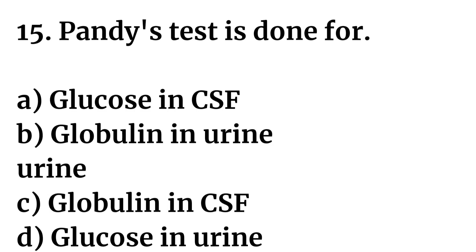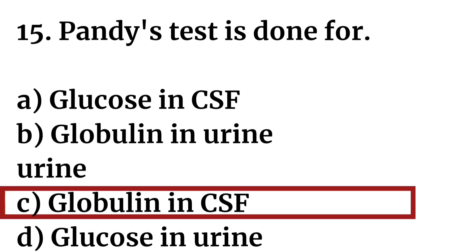Question number fifteen: Pandy's test is done for — Option A: glucose in CSF. Option B: globulin in urine. Option C: globulin in CSF. Option D: glucose in urine. The right answer is Option C: globulin in CSF. Pandy's test is done for globulin in CSF.